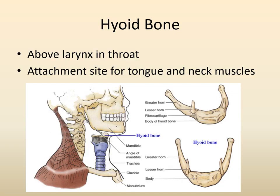The hyoid bone is usually studied with the skull, although it's not part of it, because it is right underneath the skull — in the front, just underneath the mandible. The mandible, by the way, is your lower jaw and is the only movable bone in the skull. The hyoid is horseshoe-shaped and provides muscle attachment for both the throat and the tongue.